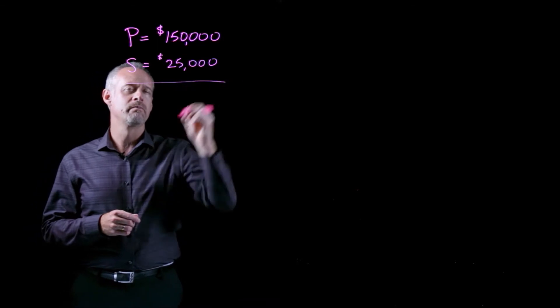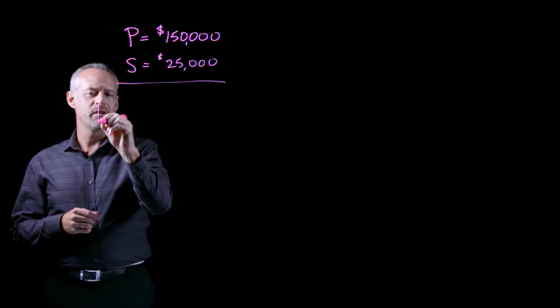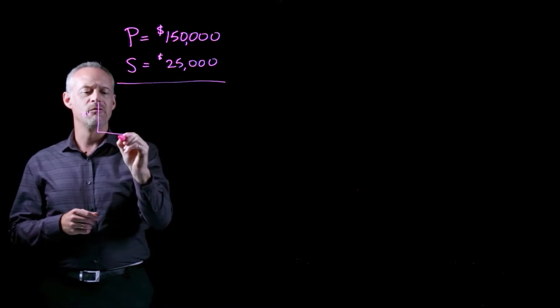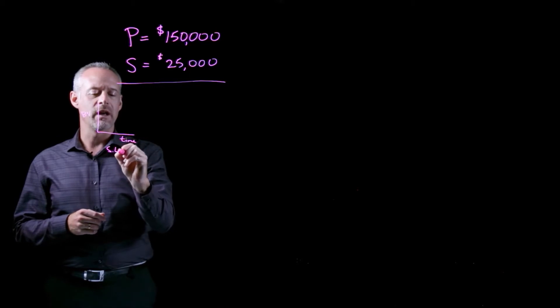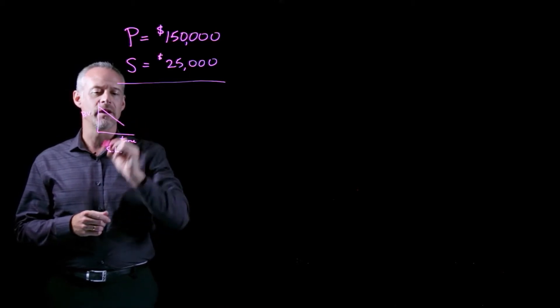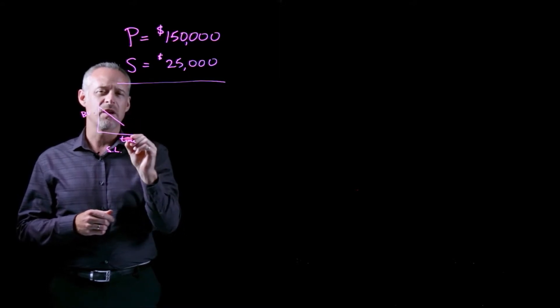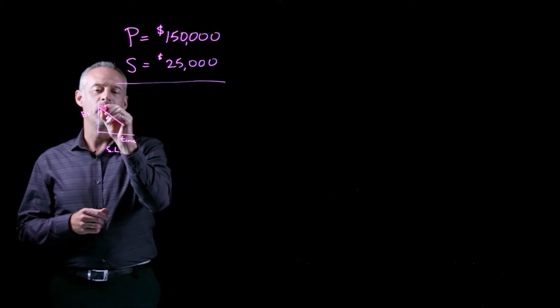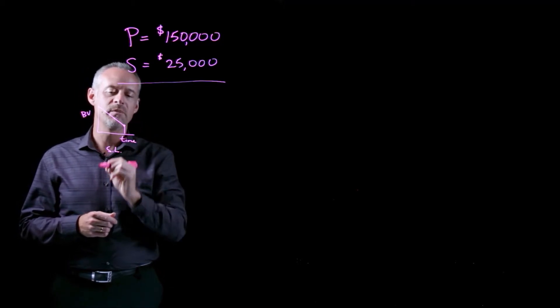Now, if I just take a moment to recap, if we graph the book value versus time under straight-line depreciation, recall that the value of the asset declines like this. And we calculated, essentially, the slope of this line by knowing a purchase price and knowing a salvage value at some time in the future.